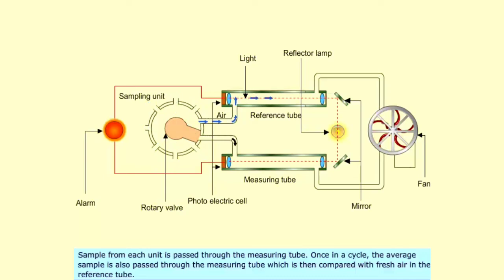Sample from each unit is passed through the measuring tube. Once in a cycle, the average sample is also passed through the measuring tube, which is then compared with fresh air in the reference tube.